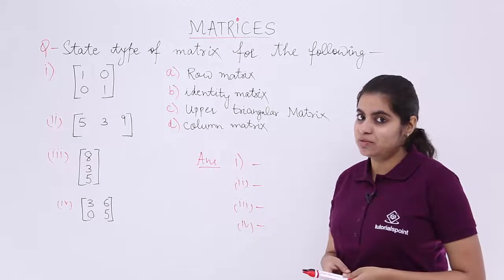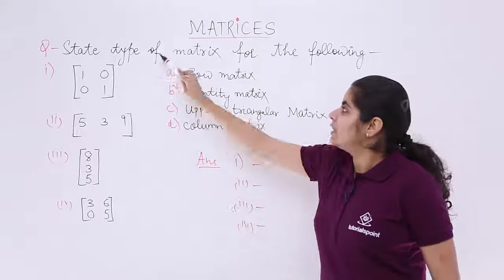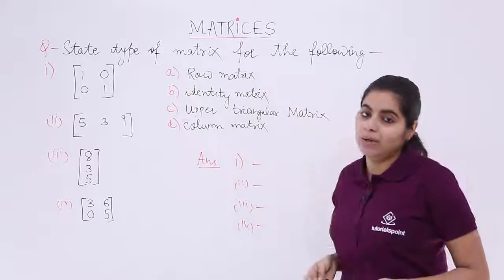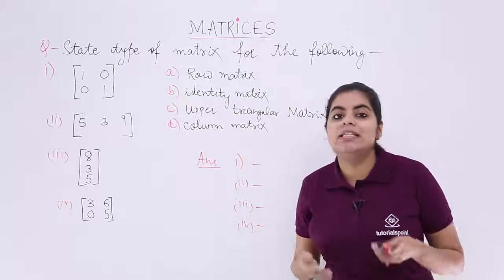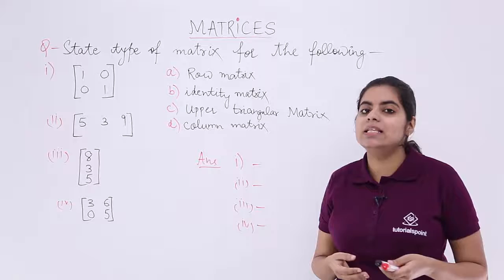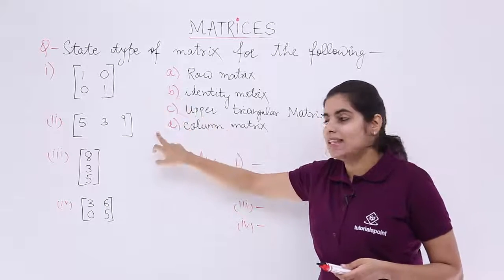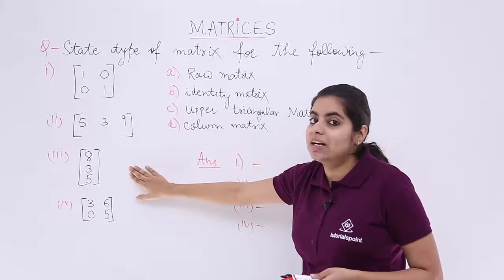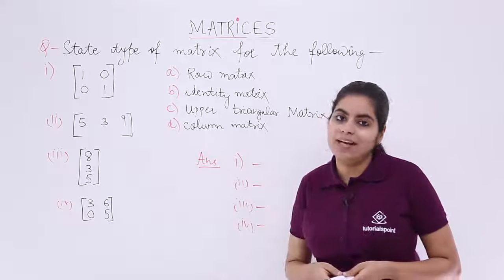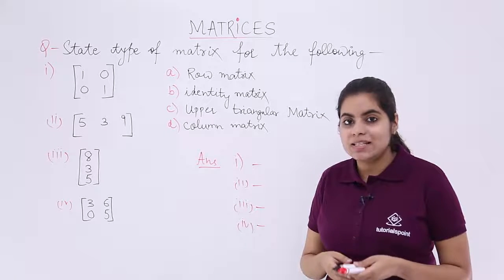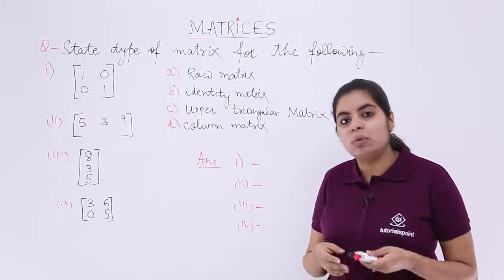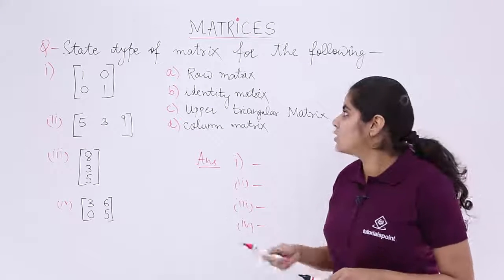The question reads as follows. State the type of matrices for the following. That means I need to basically tell what type of matrix is the part one, then the part two, then the part three and then the fourth and the last part. There are some options given to me from which I have to choose.